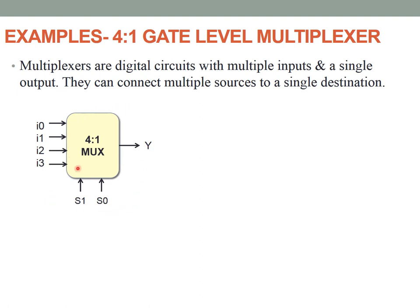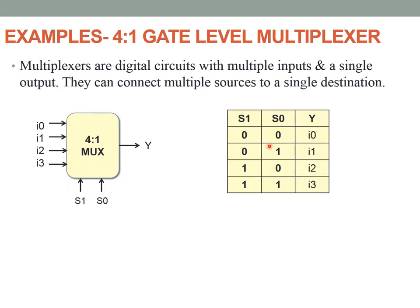Now let us describe the behavior or functionality of this multiplexer in terms of a truth table. If the select line is 0,0, the output Y equals I0. If the selection line is 0,1, Y equals I1. Similarly, if S1,S0 are 1,0, we have Y equal to I2, and if S1,S0 are 1,1, we have Y equal to I3.